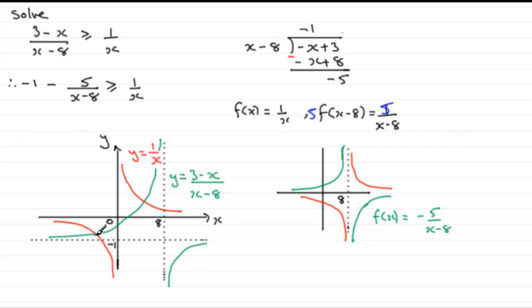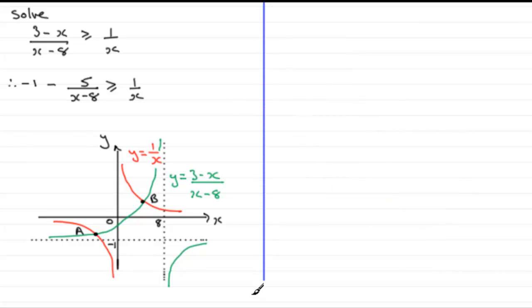We get these points of intersection. Let's call them, say, A and B. Let's just mark that one there as A, and this one here as B. So we need to calculate those points A and B. So for those points, for the points A and B, we need to equate the two equations.